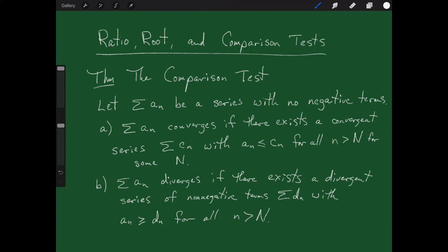The comparison test works this way. Let's say that we have a series a sub n that has no negative terms. One way of determining whether that series converges is if you can find another series — the c sub n series — where all the c sub n's are bigger than the a sub n's. So everything in the c series is bigger than everything in the a series. Then if the c series converges, then the a series converges.